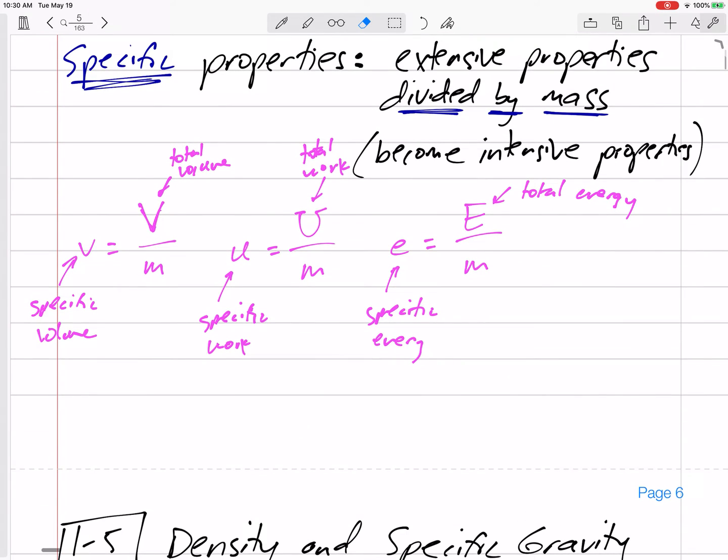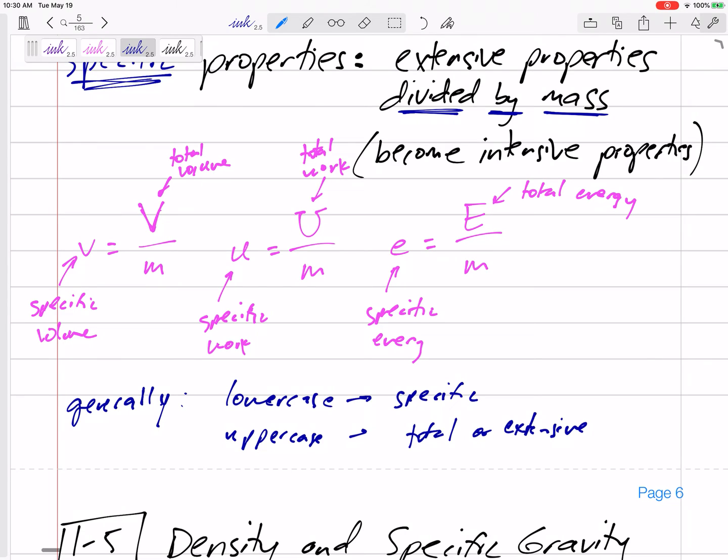In general, let's say generally, lowercase variables are specific, and uppercase are total or extensive properties.